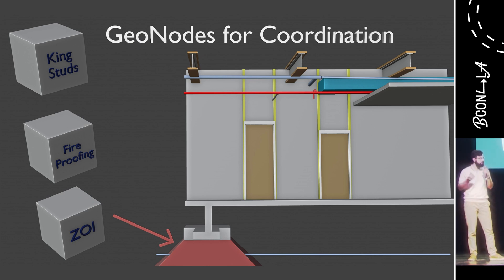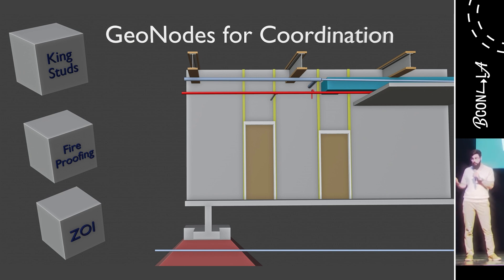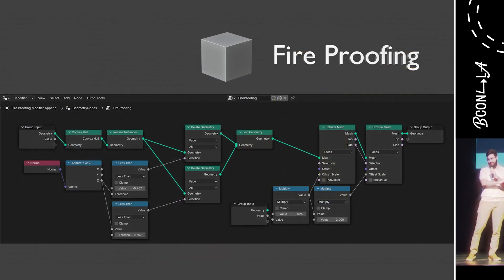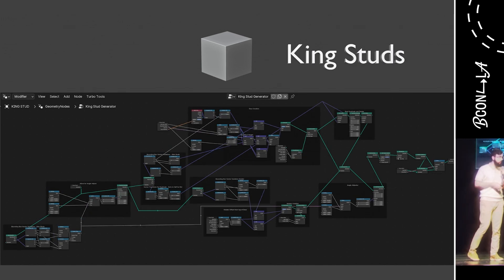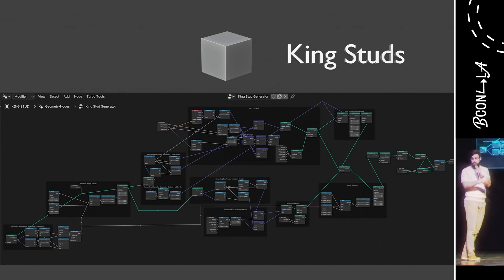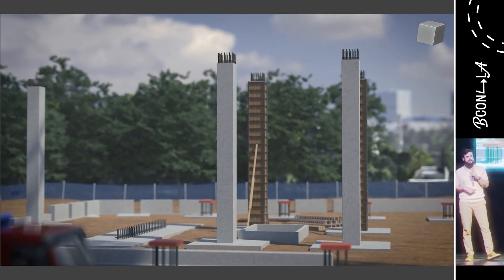On the face of it, this looks like a fine design and routing for the system shown — until we start adding in detail for constructability review. We can add king studs to our doors, which are required to run from the frame all the way up to the deck. We can add fireproofing to our beams, which is spray-applied after the beams go in but before the MEP systems. And we can add zones of influence to our foundations, which represent the extreme pressures underneath our buildings. Once we add this detail, we immediately see that our design might need to be reworked. These are just a few examples of easy geometry node setups we can leverage on our projects.